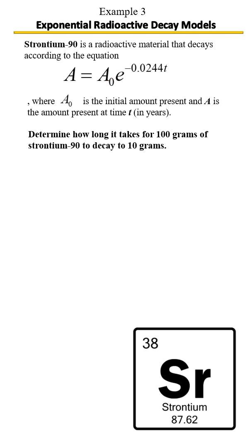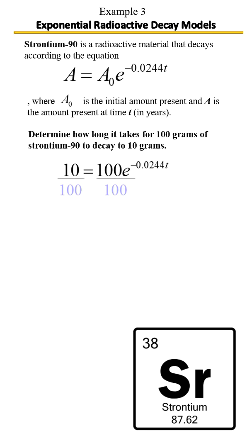We're going to go ahead and plug in those values. Once we do, this is our equation. Now to solve this exponential equation, we're solving for t, so we peel away the layers. First, you want to get rid of the 100, then get rid of the negative 0.0244 exponent to reach t. Let's divide both sides by 100 to get rid of that.